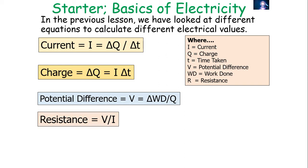In previous lessons we've looked at different equations to calculate electrical values. Current is the rate of flow of charge, so it's the change in charge divided by the change in time. We can rearrange that to get charge equals current times time: ΔQ = IT. Potential difference is the work done into or out of a circuit per unit charge, so V = W/Q. And resistance is equal to potential difference divided by current: R = V/I.